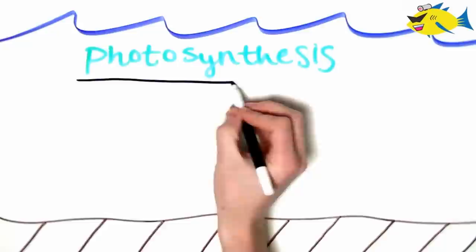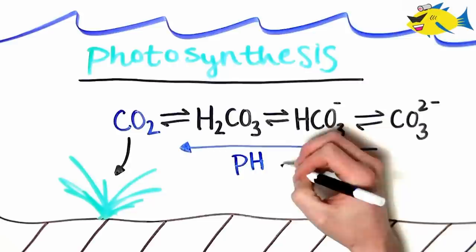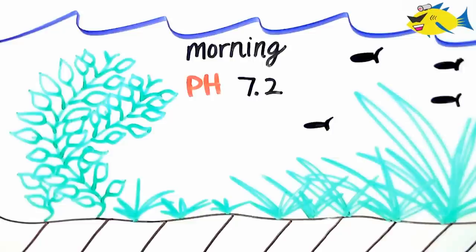On the other hand, when photosynthesis takes place during the day, CO2 is removed from the water column, shifting the DIC equilibrium to the left and resulting in the consumption of hydrogen ions. This is why the pH of a planted aquarium will gently increase throughout the day. It's important to understand that in our aquarium, the pH is always changing.